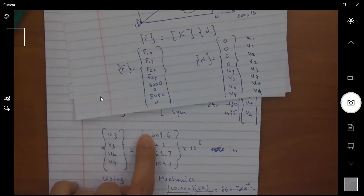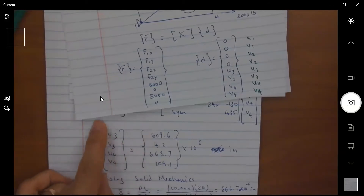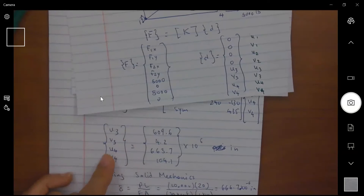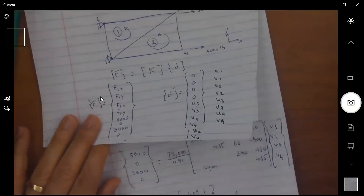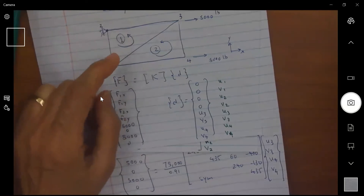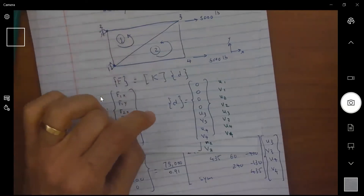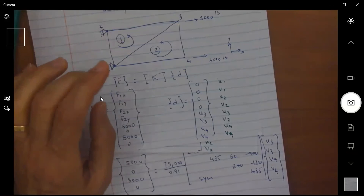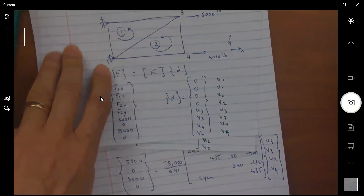The last step is to find the stresses in each element in order to determine the safety factor. Similar to the first example, we find sigma = D times B multiplied by the nodal displacements for each element.